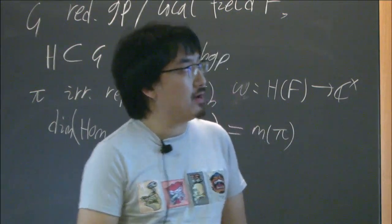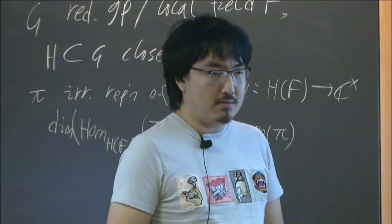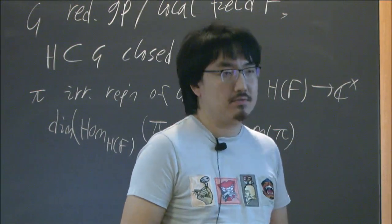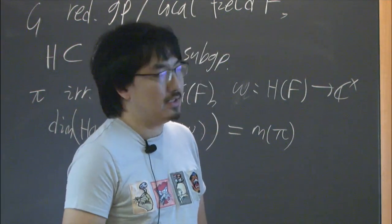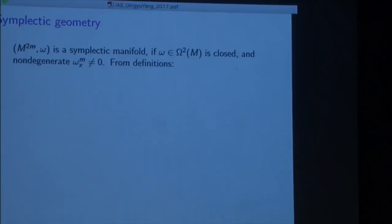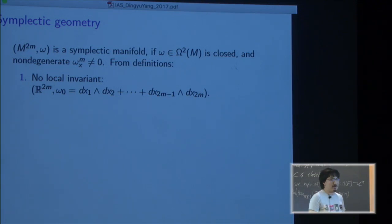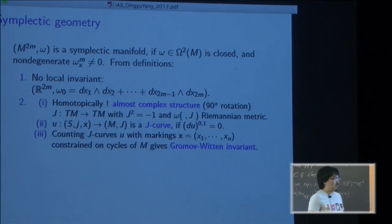Let's give a little background. A manifold, even dimensional with a two-form, is a symplectic manifold if the two-form is closed and non-degenerate. It means the top wedge form pointwise is non-zero. From the definition there's no local invariant - locally it's always the standard symplectic vector space, so you can only look into the global things from the definition.